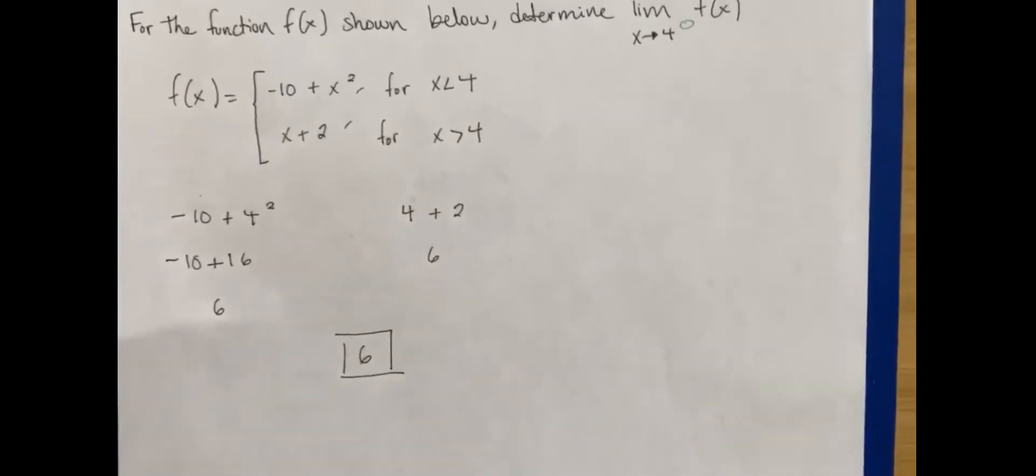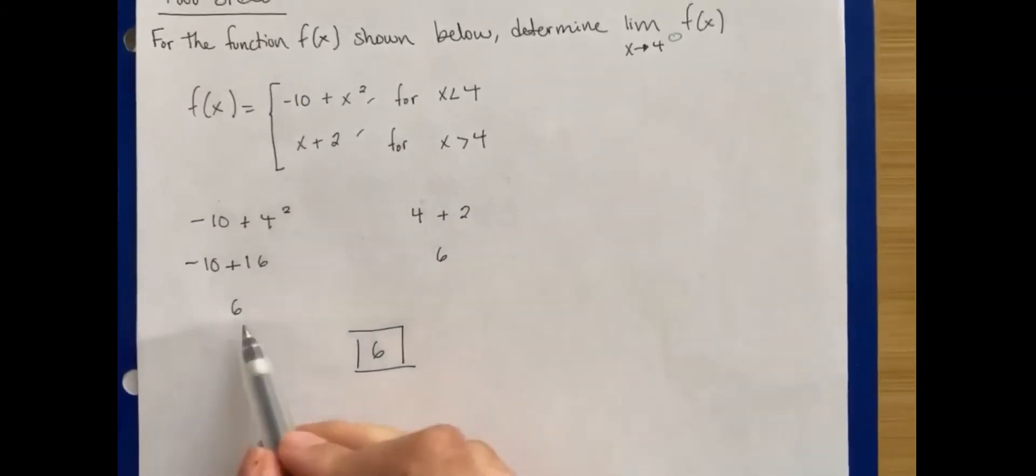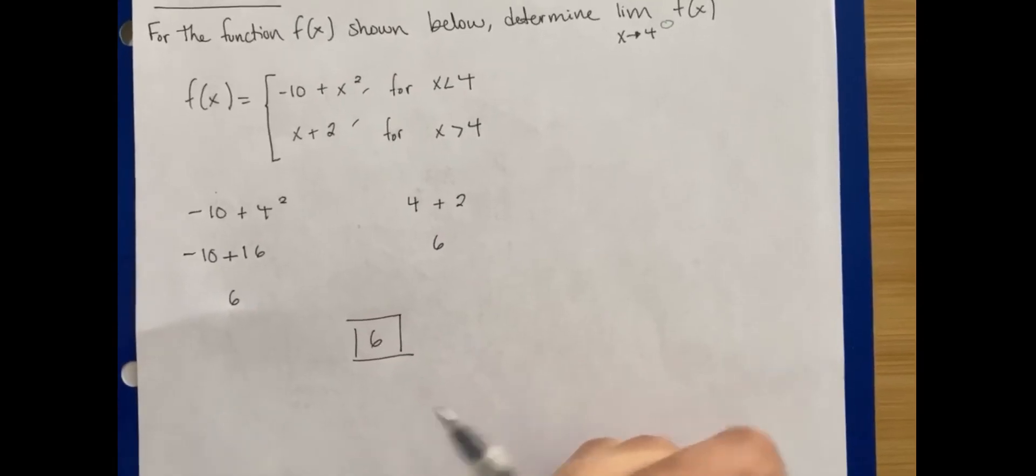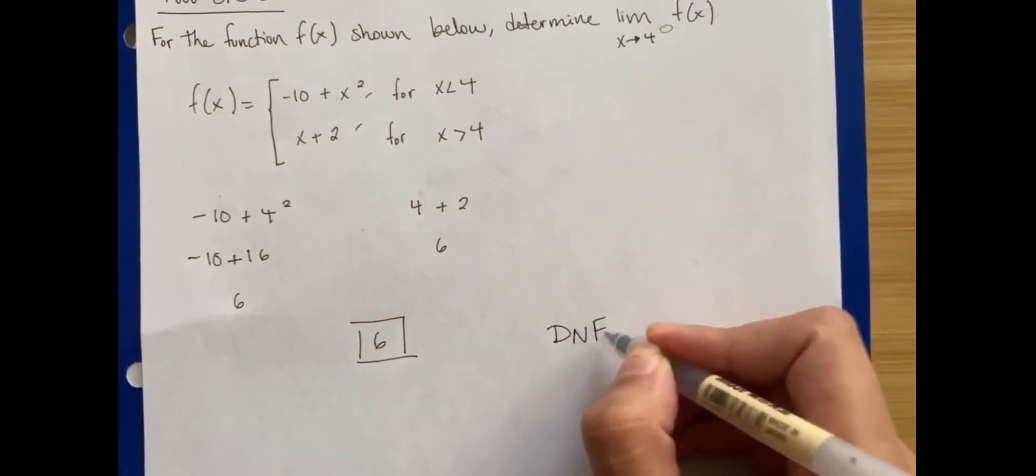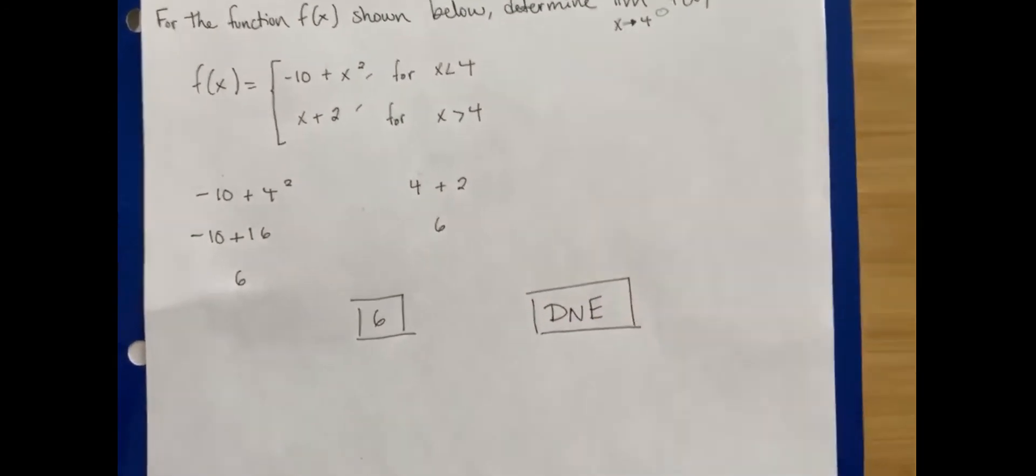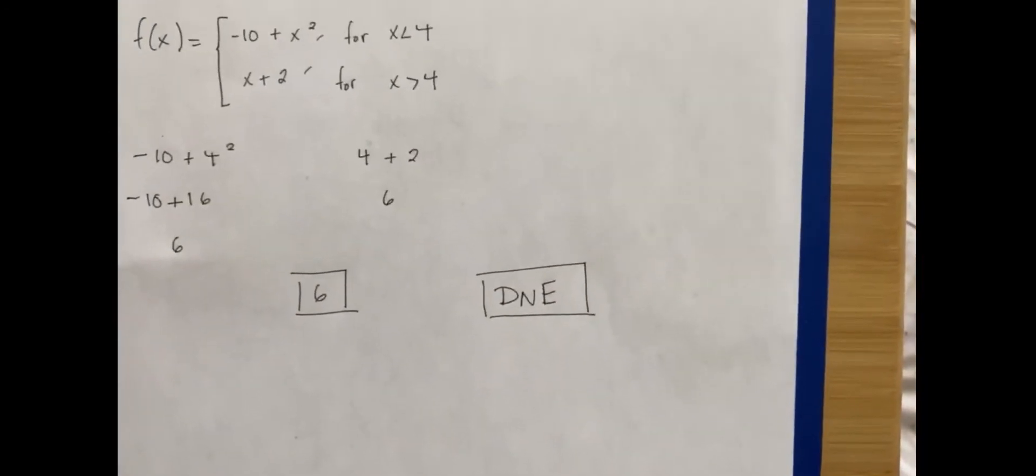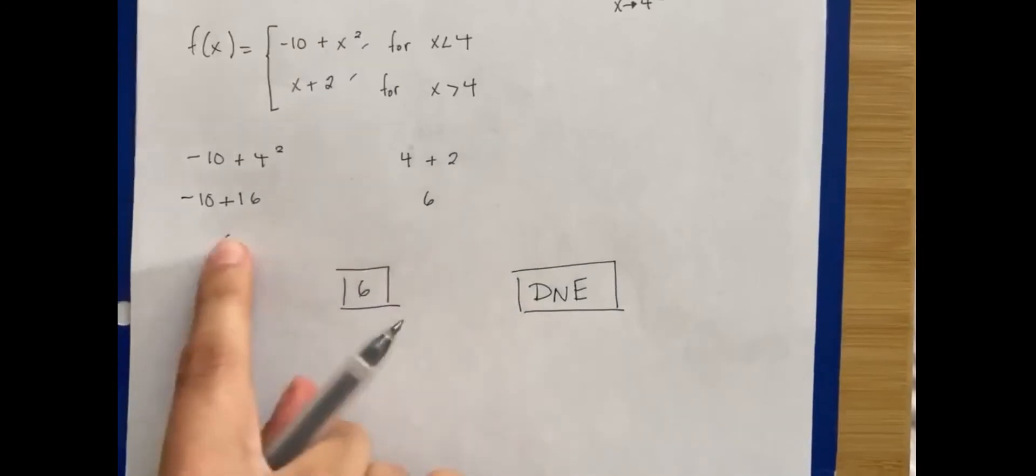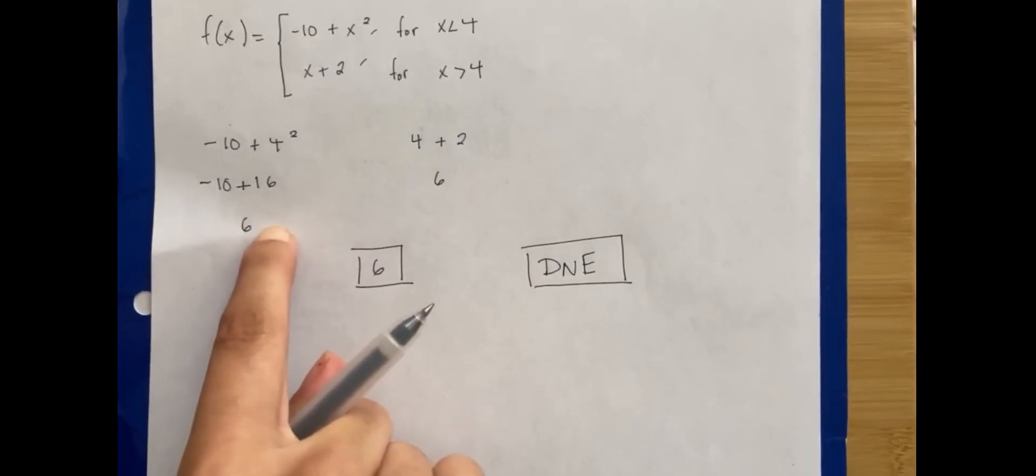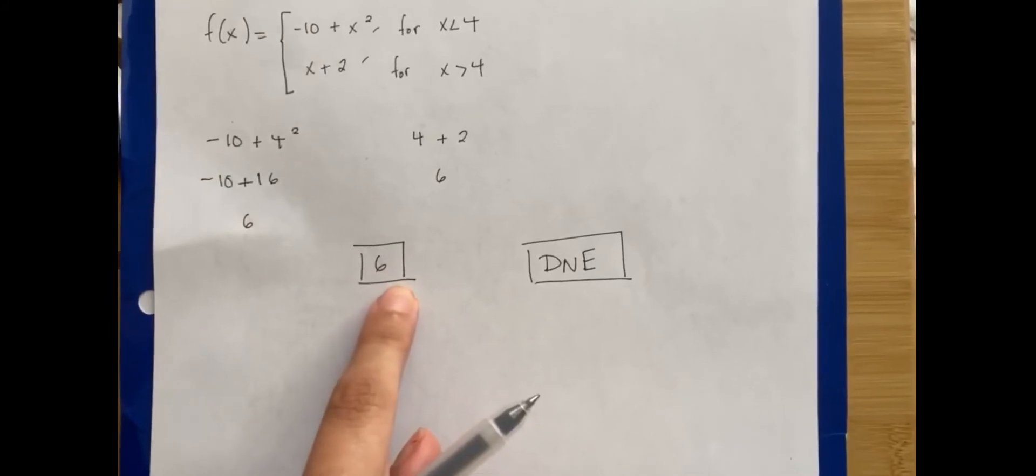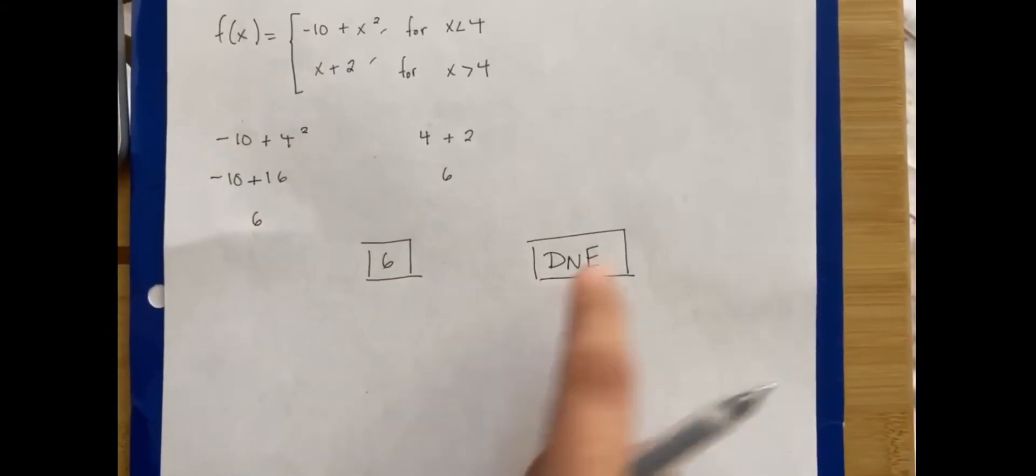Now what if they approach different numbers? What if this was ten and this was twelve? Then you would select the DNE button on Delta Math, which stands for does not exist. So if they're approaching different numbers, then that limit does not exist because it doesn't approach the same value like this one does. So you would hit this button right here.